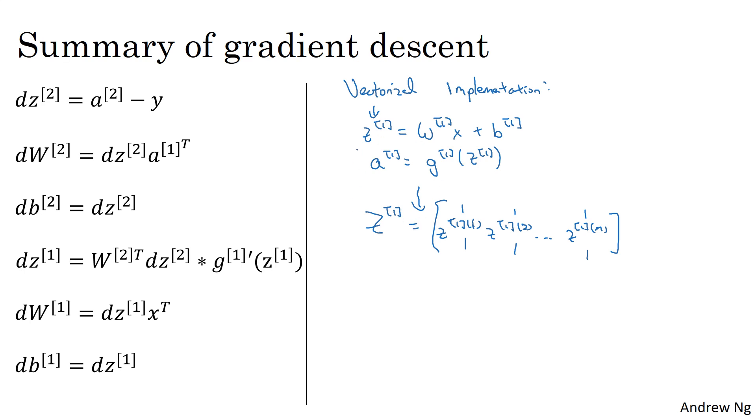And then we found that by stacking things up in columns and defining the capital uppercase version of these, we then just had z1 equals w1x plus b and a1 equals g1 of z1.